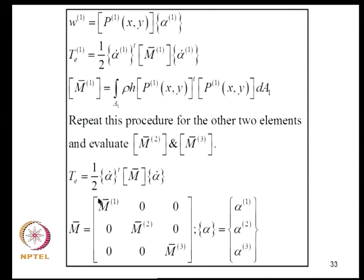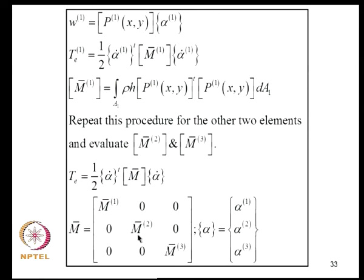The element kinetic energy involves assembling mass matrices from all three sub-triangles, forming a 27×27 block-diagonal matrix M̄ with each block being a 9×9 sub-matrix. The corresponding generalized coordinate vector α is 27×1.